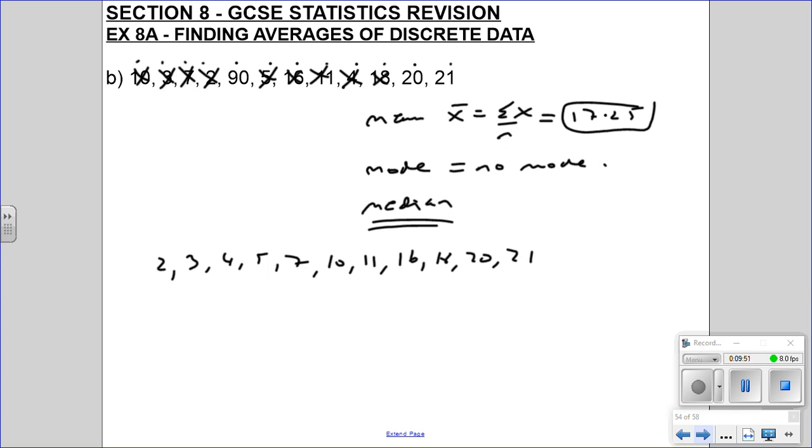So 16, 18, 20, 21, and 90. So that 90 is really big, so that's why our mean is going to be skewed.